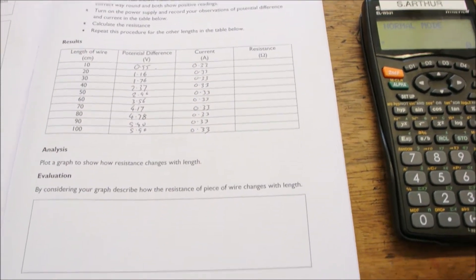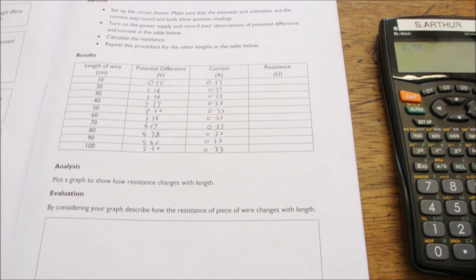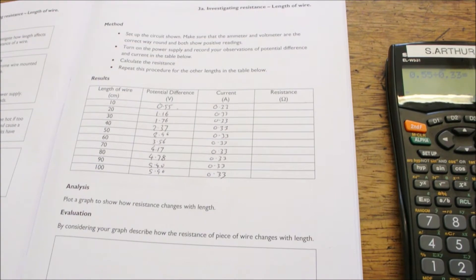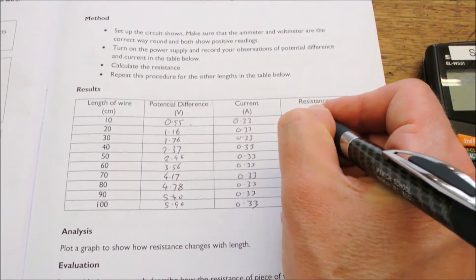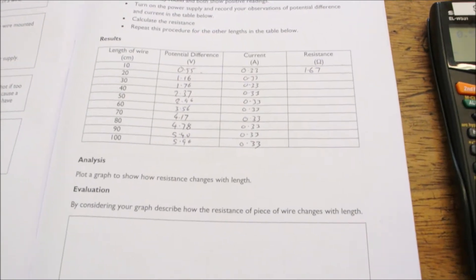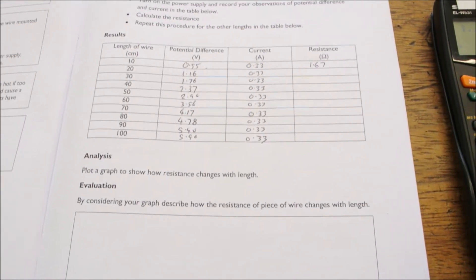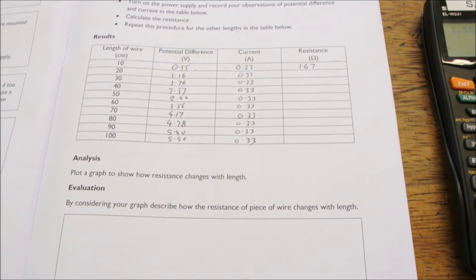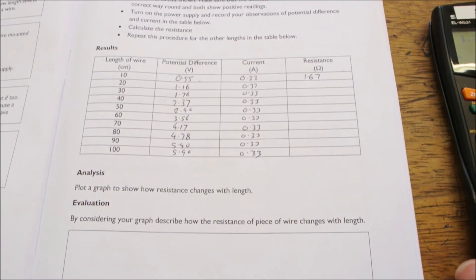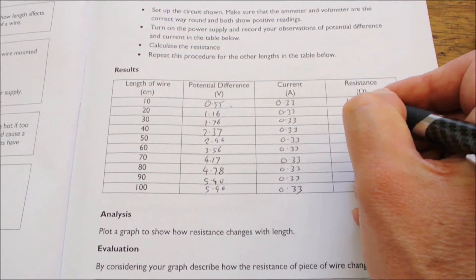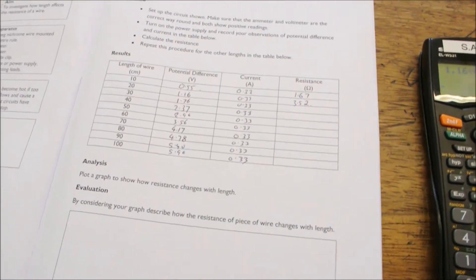So the first line shows 0.55 divided by 0.33, giving us a resistance value of 1.67 ohms. So we'll put that in there. And then the second line is 1.16 volts divided by 0.33 amps to give us a resistance of 3.52, and so on.